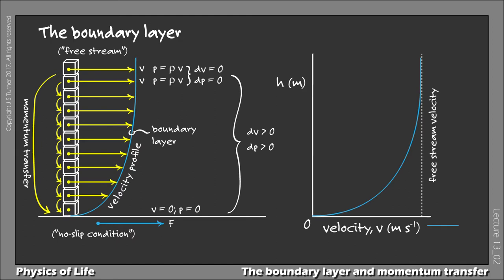In terms of momentum transfer, what matters here is the shear rate, gamma. This is simply the first derivative of the velocity, dv over dh, indicated by the tangent line of the velocity curve.